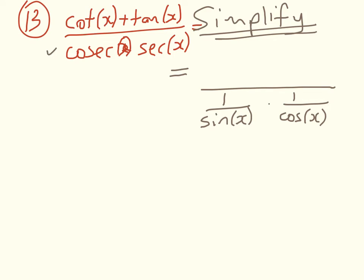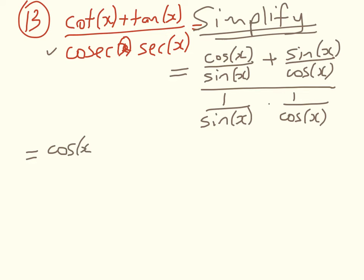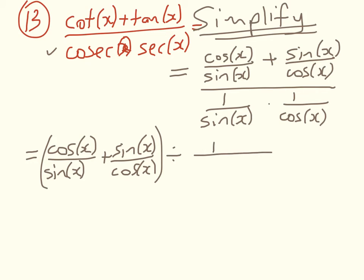So that's that done. Now let's look at the top line, the numerator. Cot x is the reciprocal of tan of x. So it's cos of x over sin x plus sin of x over cos x. All right, so we'll take a bit more space. Let's look at what we've got. Well, the numerator is this. And we are dividing that, put that in a big bracket, dividing it by 1 over sin x cos x.